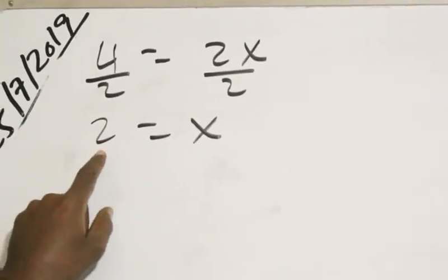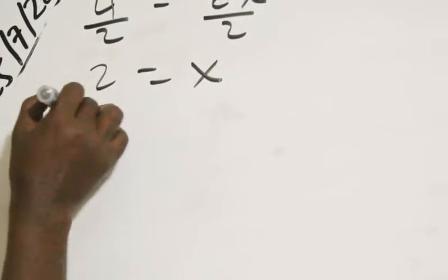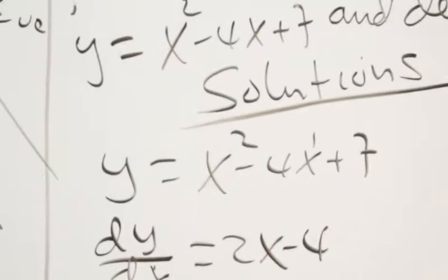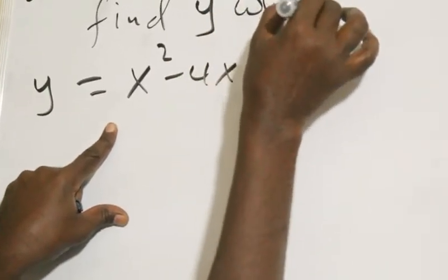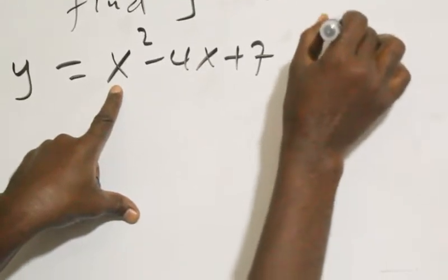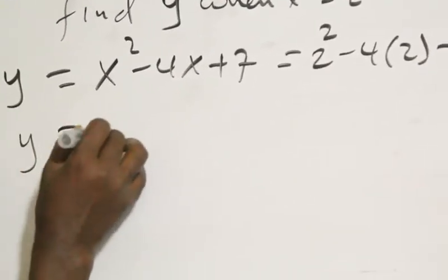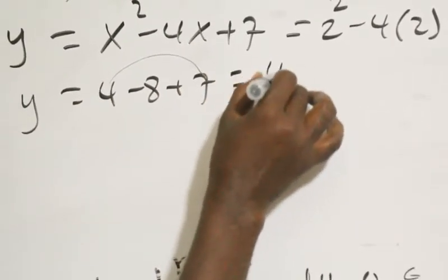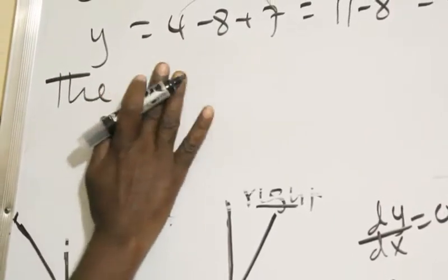We have y equals x squared minus 4x plus 7. Find y when x equals 2. We get 2 squared minus 4 times 2 plus 7. Two squared equals 4, so 4 minus 8 plus 7 equals 3. The answer is positive 3.